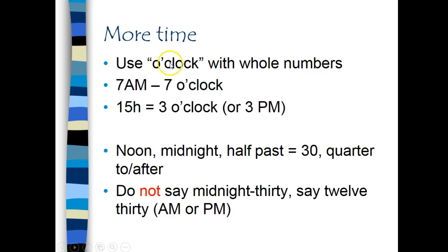We use the words o'clock with whole numbers. So 7 a.m. could be 7 o'clock. In normal standard conversation, we do not use military time. So 1500 hours in normal English conversation, we would say it is 3 o'clock or 3 p.m.